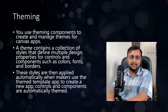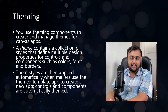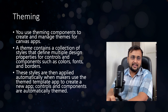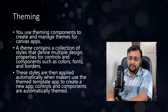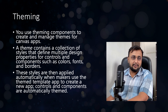Now let's talk about the fourth component — the theming component. We can use the theming component to create and manage themes for Canvas apps. A theme contains a collection of styles defining multiple design properties for controls and components such as colors, fonts, and borders. These styles are applied automatically when a maker uses the theme template app to create a new app. In your organization, you can create a theme with your preferred colors, fonts, formats, and border styles, then create one template for Power Apps so users can download and start their app development from it.